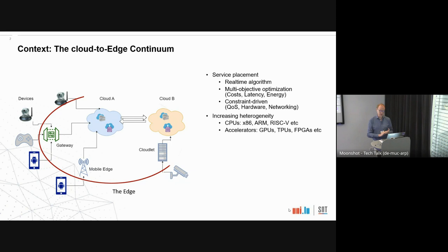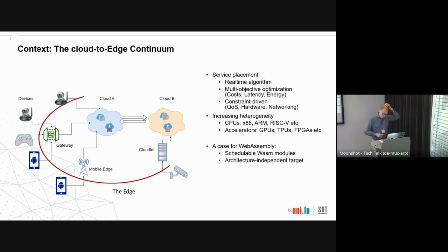We observe that in this kind of infrastructure we have increasing heterogeneity — certainly x86 variants and ARM processors are prevalent, and I'm expecting to see a lot more RISC-V architectures in the wild as well. We also have a bunch of accelerators of various kinds which we're not targeting yet but will be in the future. This is our context and the case for WebAssembly: we want schedulable Wasm modules as an architecture-independent target.